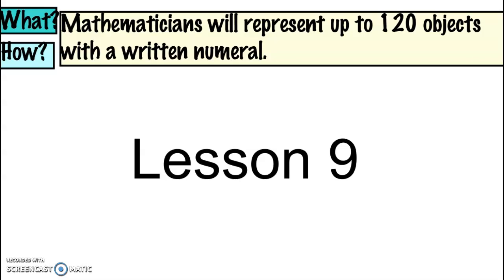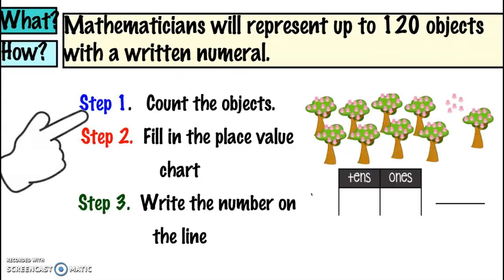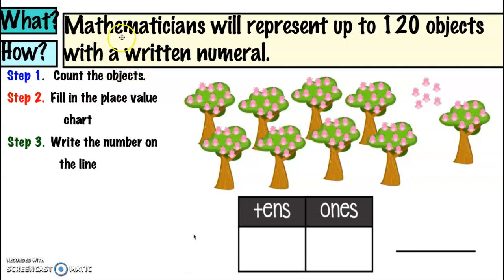Good morning, mathematicians, and welcome to our math workshop. Today I want to teach you that mathematicians will represent up to 120 objects with a written numeral. In doing this lesson we're going to follow three steps: first we're going to count the objects, then we're going to fill in the place value chart, and our last step we're going to write the number on the line.